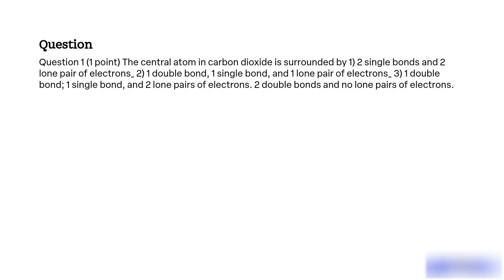What is the arrangement of bonds and lone pairs around the central atom in carbon dioxide with the objective of determining its molecular geometry?